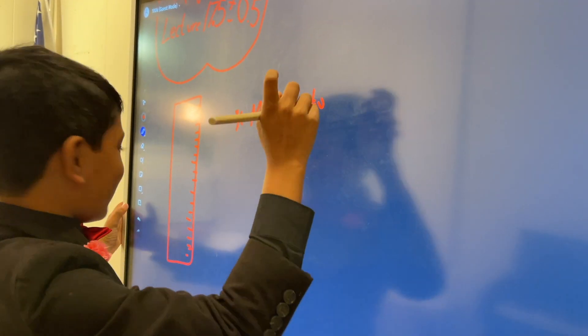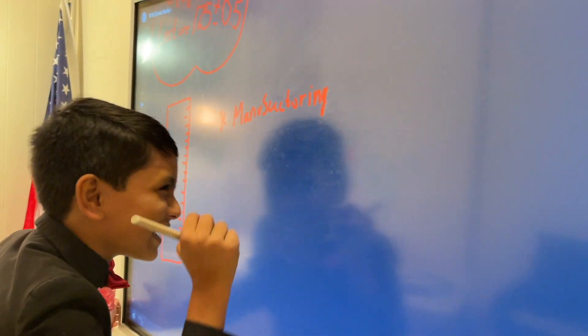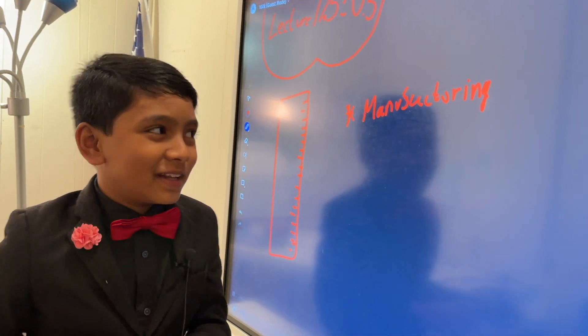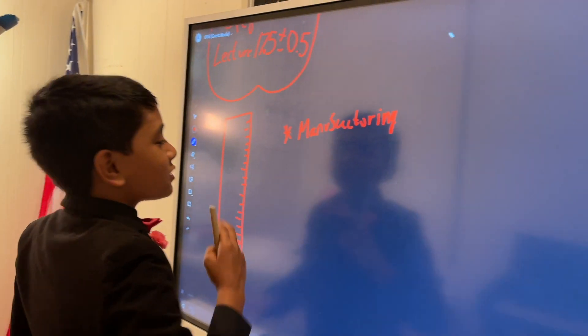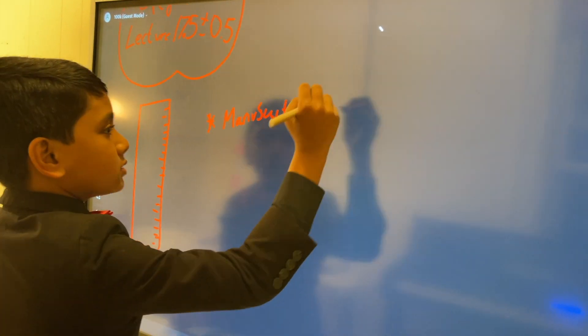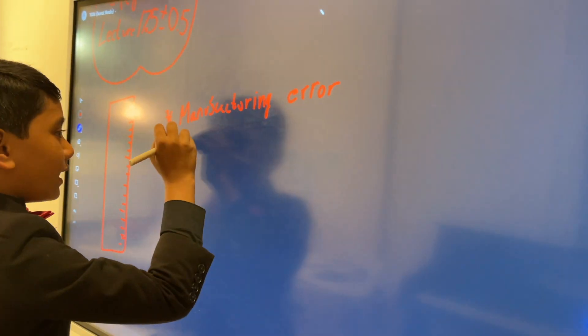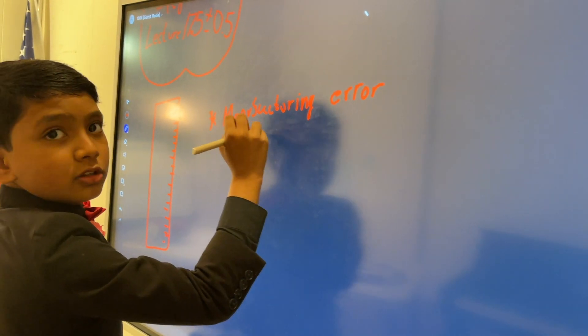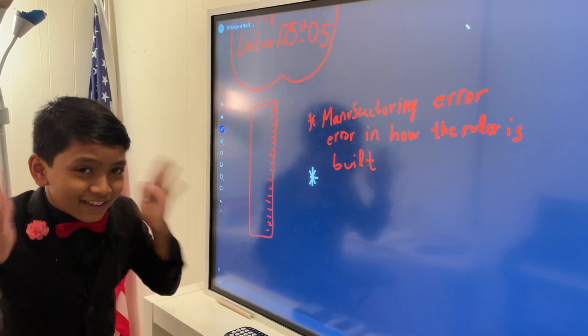So, manufa— I don't know how to spell manufacturing. I'm going to have a hard time in spelling. Manufacturing. So, manufacturing error, which is an error in how the ruler is built.